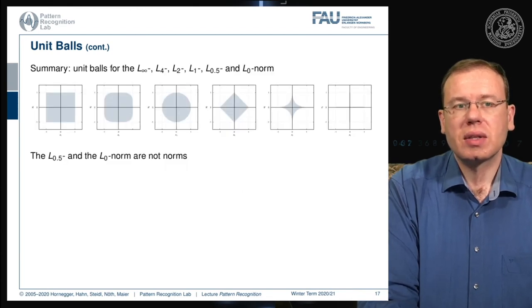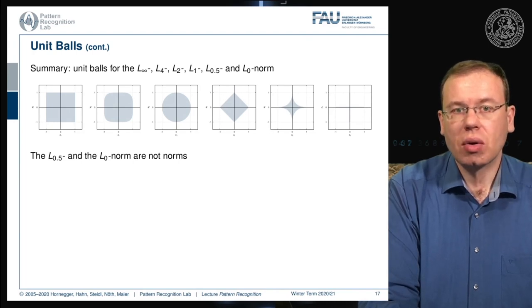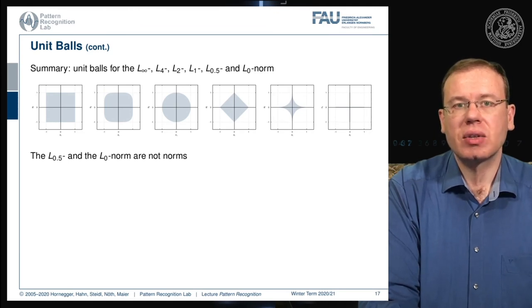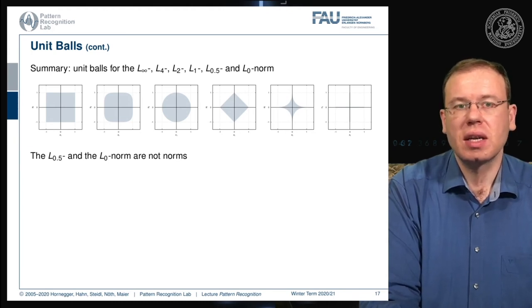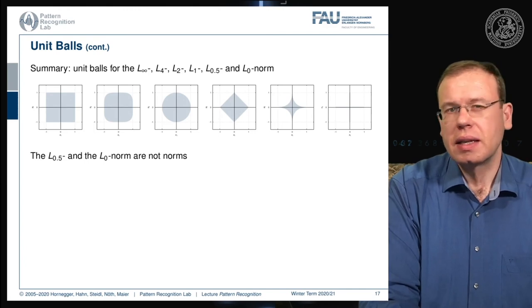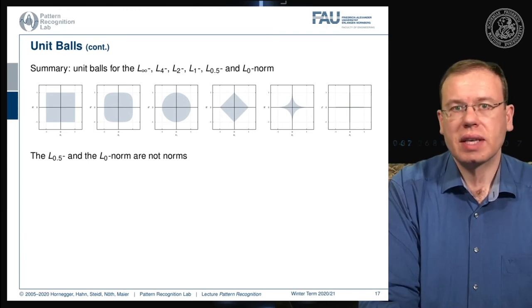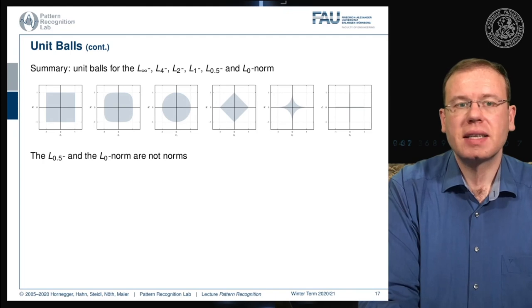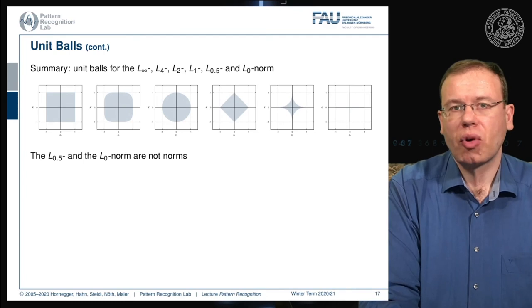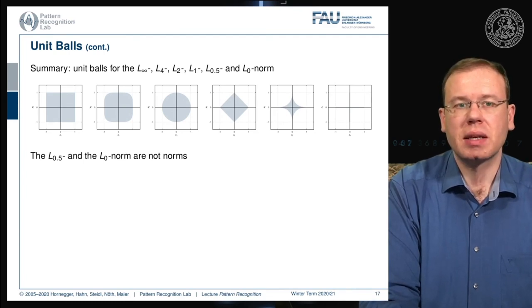We can look at unit balls for other norms. Starting with the maximum norm, the L4 norm, the L2 norm, the L1 norm, and then we can go to the not-really-norms like the L0.5 norm and the L0 norm. These are no longer convex optimization problems, but you can generally use them if you want to perform optimization. Yet the resulting optimization problem is typically pretty hard.